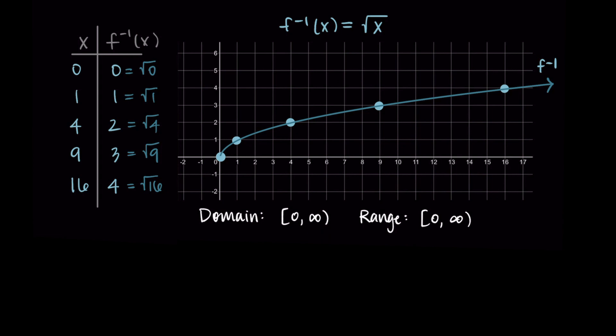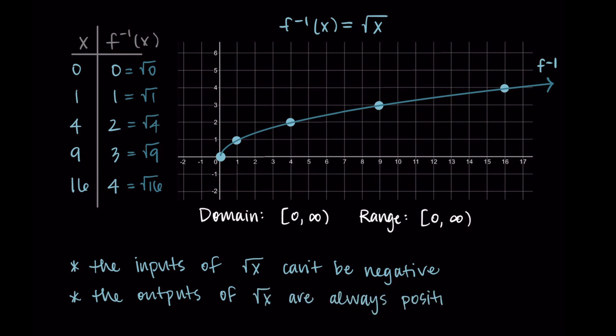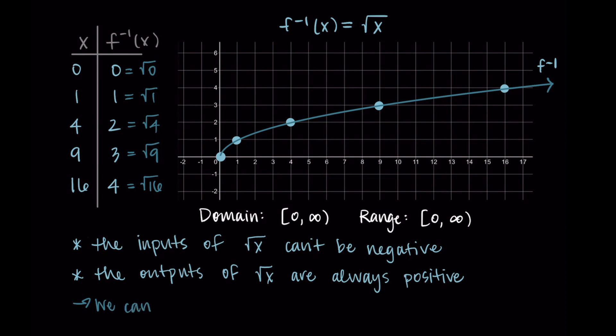Before we close, I want to make a couple comments about radical functions. The inputs of square root of x cannot be negative. That comes from how it's defined when we restrict the domain of x squared. We can input zero or any positive value, but we can't take a negative value. This also means that the outputs of square root of x are always positive. When we do square root of a number, it's always going to be a positive value and not a negative one. You might see the square root of x written as x to the one-half power. That's just another way to write the same thing.